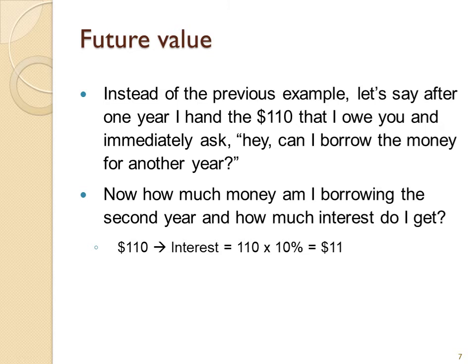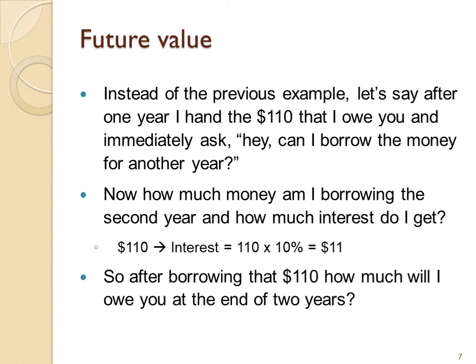The second year I'm borrowing $110. In other words, the interest on that amount is 10% of $110. So $11 is what I would owe you in interest for the second year. So added together with the interest in the first year, you can see that the amount that I would owe you at the end of two years would be $121. Calculated from the point of view of just one year, that means the future value is the $110 that I borrowed at the end of year one times 10% plus $110. So I owe you $121.